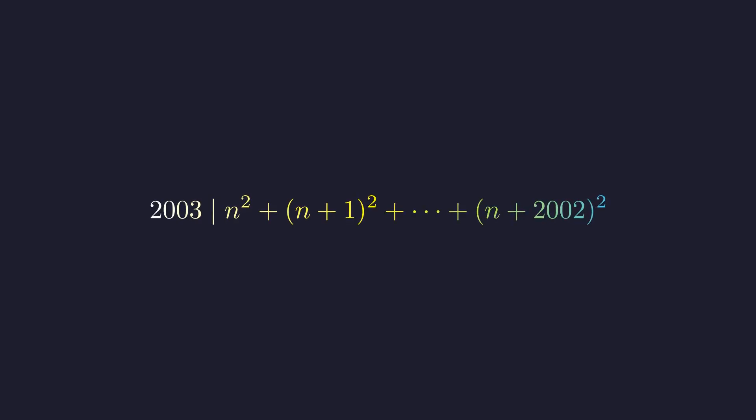We need to find the smallest positive integer n for which this sum of 2003 consecutive squares is divisible by 2003. This seemingly complex problem has a surprisingly elegant solution.